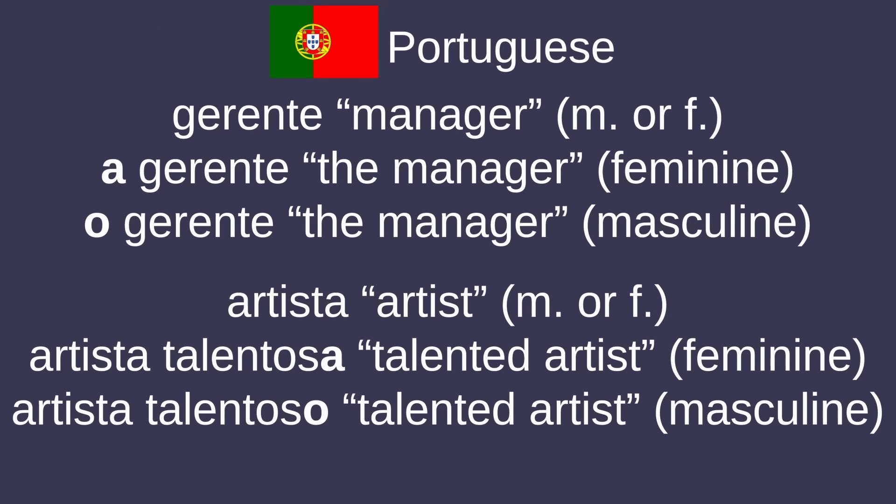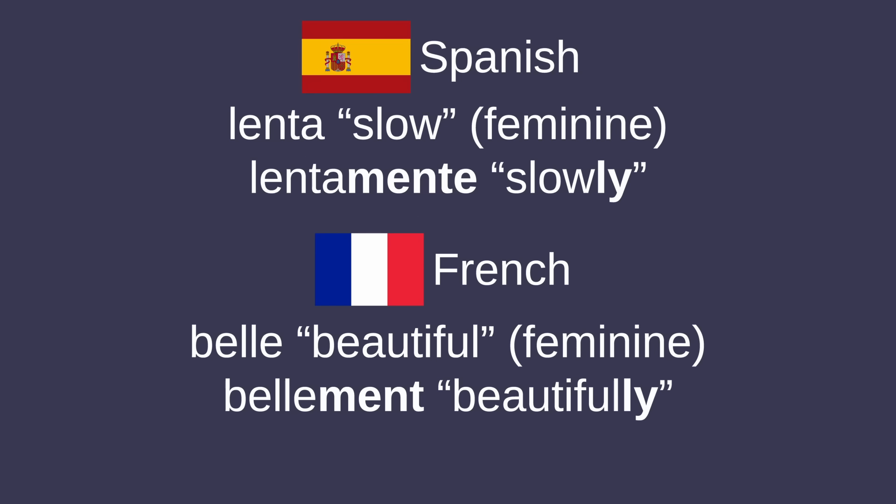There are plenty of nouns, especially for people, that have the same base form, only differing in the inflection of their modifying adjectives, articles, and pronouns. Adverbs are typically formed by adding a suffix similar to '-mente' to their adjective counterparts.